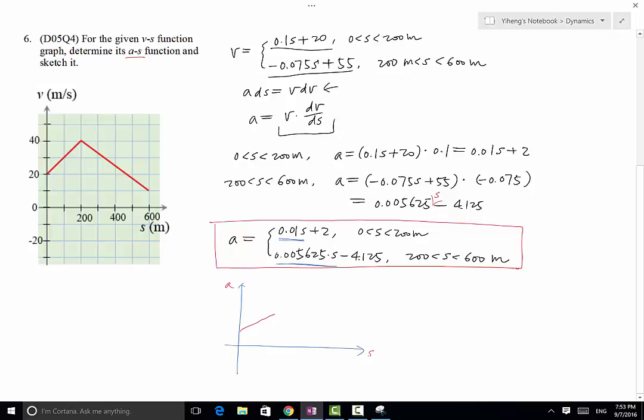So the graph looks something like this. This is a, this is s. When s equals 200, there's going to be some step change. And then this is when s equals 600. So the graph will look like this.